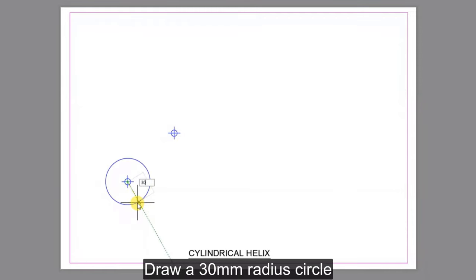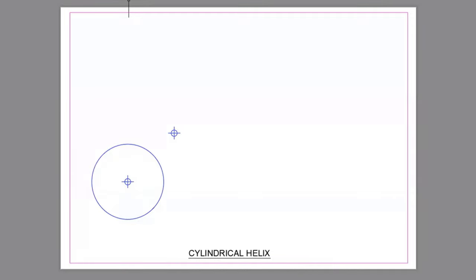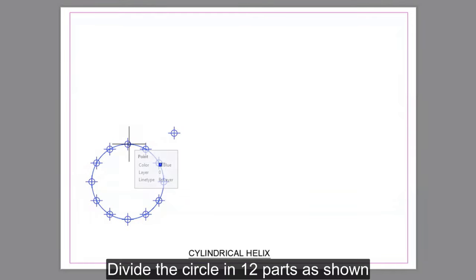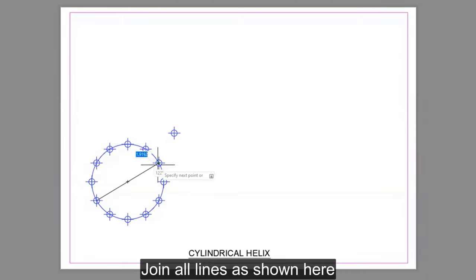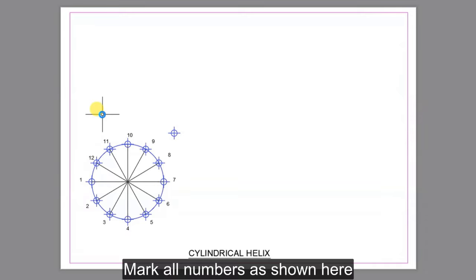Draw a 30 mm radius circle. Divide the circle in 12 parts and join all lines as shown here. Mark all numbers as shown here.